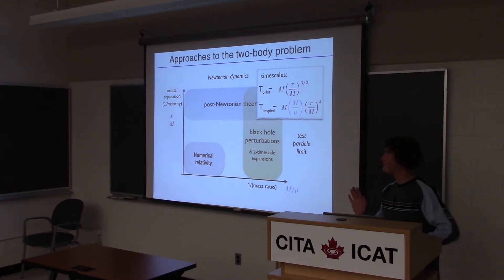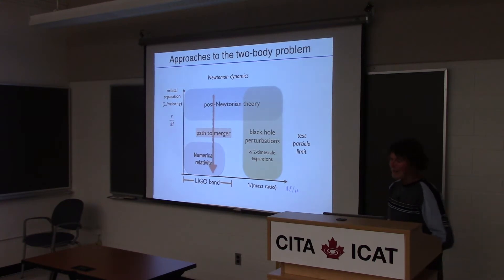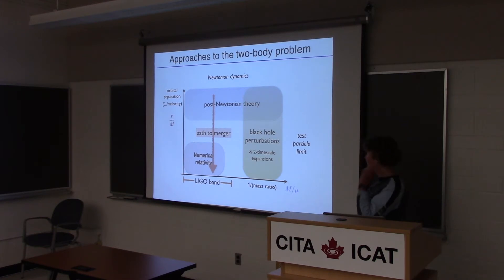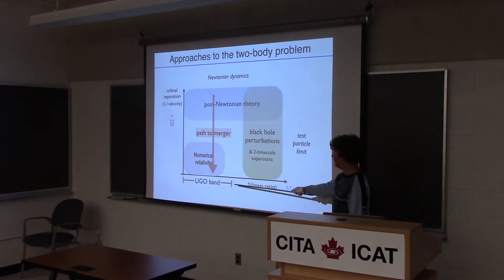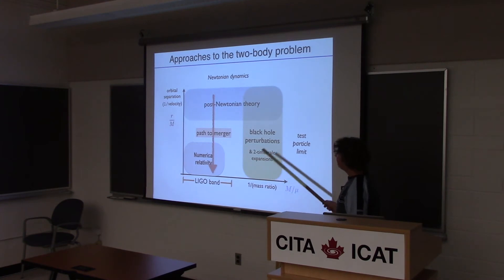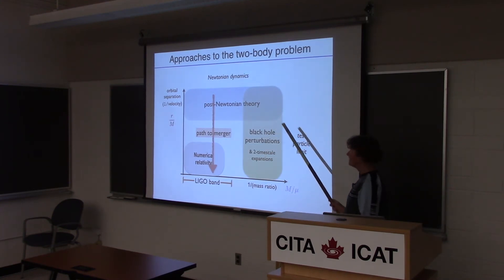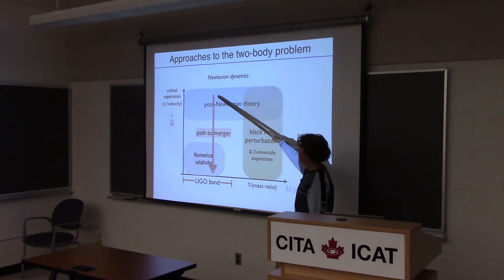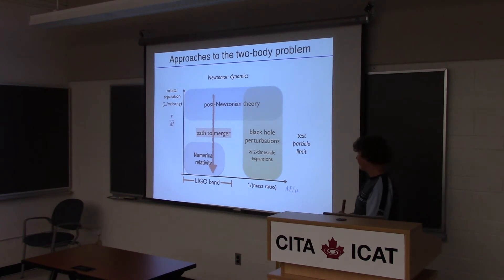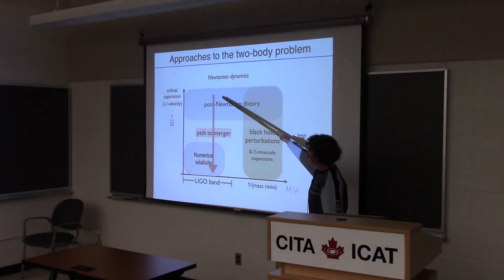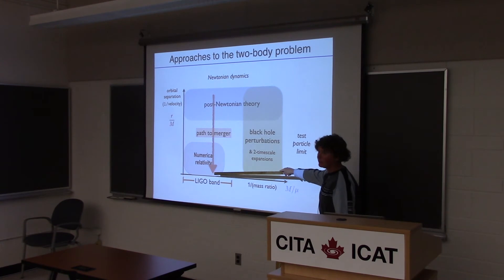For the LIGO detectors, the Earth-based gravitational interferometers will only have access to mass ratios that are not too extreme — so less than 1000 maybe. An individual binary within the detector-sensitive band will start at larger orbital separation and then evolve to very small separations until they collide. So we need models that cover the entire path to merger for these binaries.